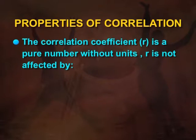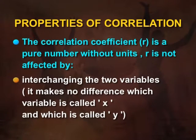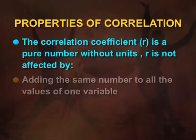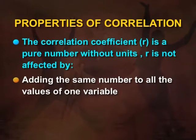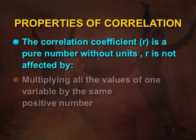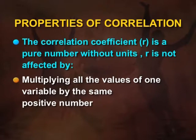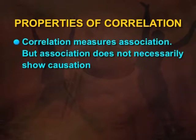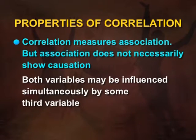The correlation coefficient r is a pure number without units. R is not affected by the following factors: interchanging the two variables — it makes no difference which variable is called x and which is called y; adding the same number to all the values of one variable; or multiplying all the values of one variable by the same positive number. Correlation measures association, but association does not necessarily show causation. Both variables may be influenced simultaneously by a third variable.